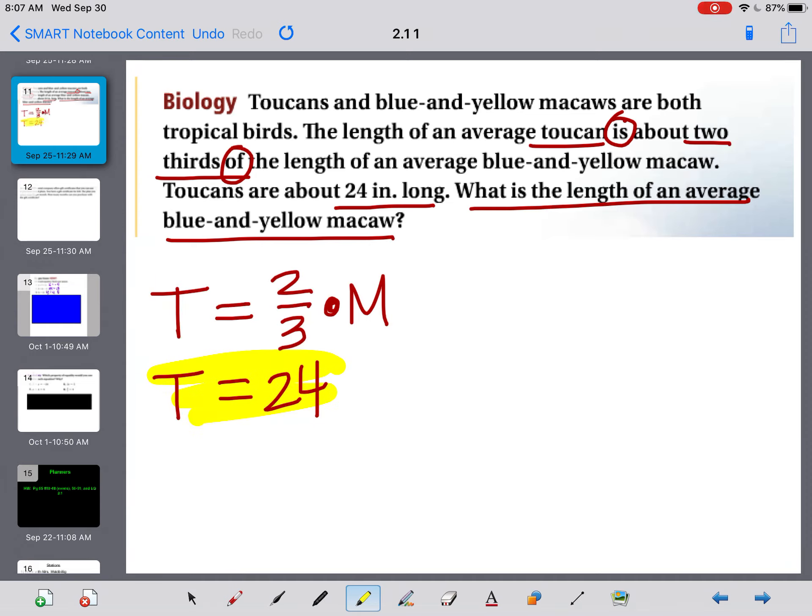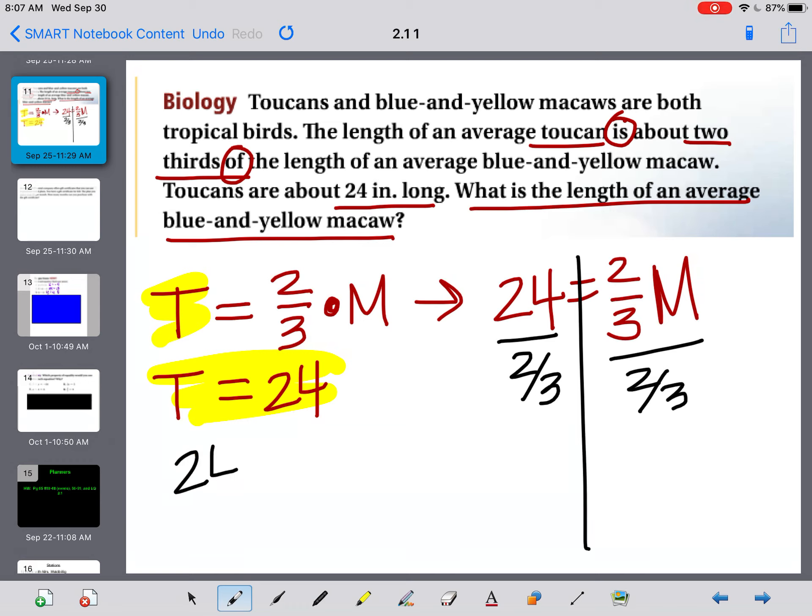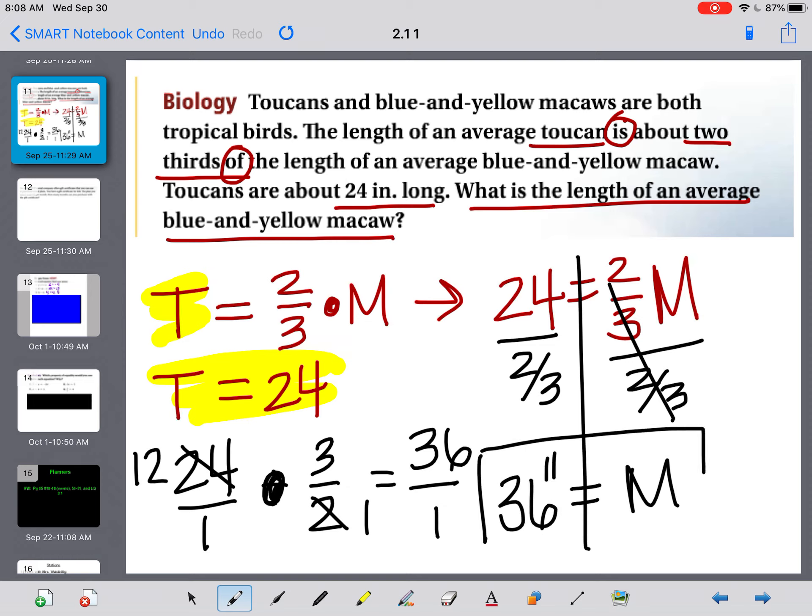I should be able to take this information right here, 2t = 24, and plug it in right here when I rewrite my equation. So I have 24 = (2/3)m. To solve this, I need to do the opposite of multiplication, so I need to divide by 2/3. I'm going to write my side problem, 24/1 ÷ 2/3. I'm going to keep, change, flip, make this a 3/2. And then I'm going to simplify before I multiply. Go straight across and find out 12 times 3 is 36, 1 times 1 is 1. So a macaw, a blue and yellow macaw, is approximately, or on average, 36 inches.